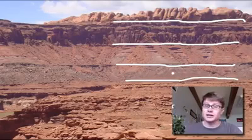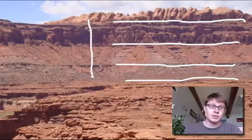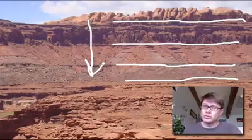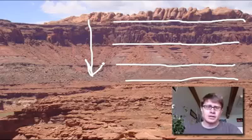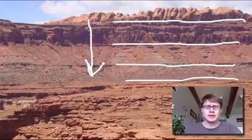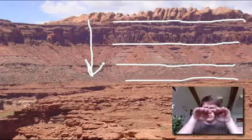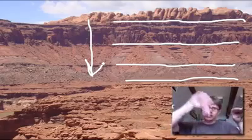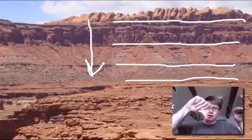Horizontally, rock looks the same. But the law of superposition says the farther down you go, the older that rock is going to be. Another thing you should understand is that rock is going to be laid down horizontally — in other words, flat — because gravity is always pulling down.